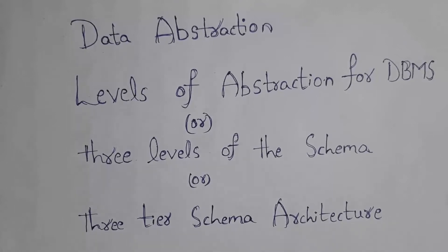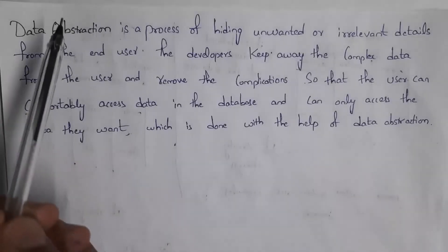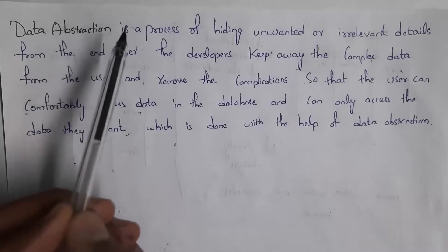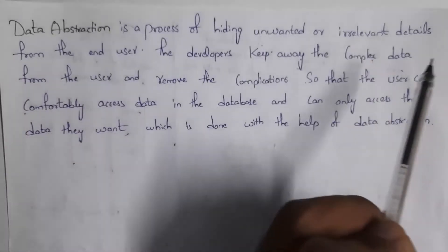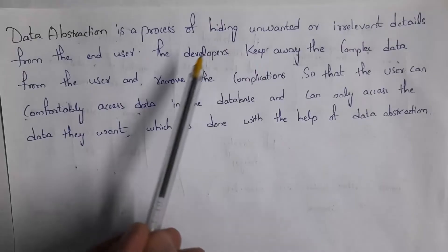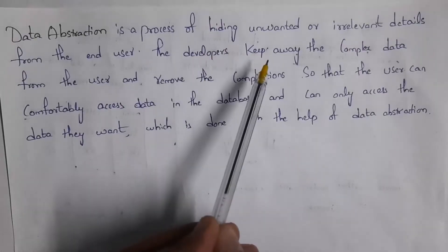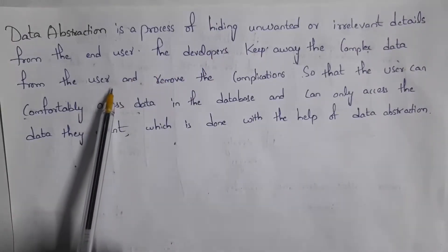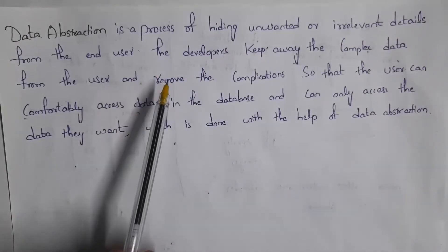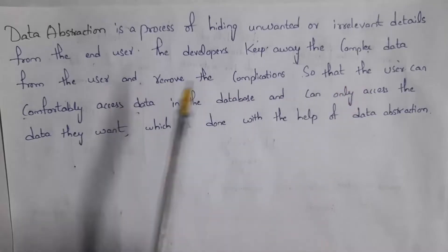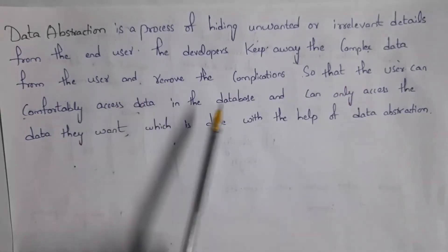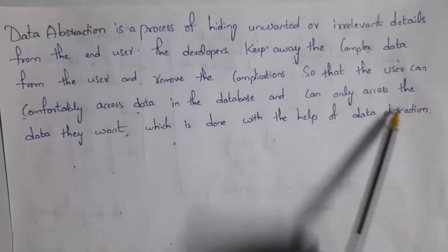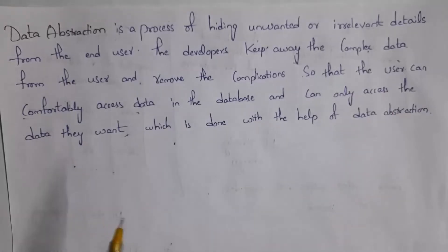First I will explain what is data abstraction. Data abstraction is a process of hiding unwanted or irrelevant details from the end user. The developers keep away the complex data from the user and remove the complications so that the user can comfortably access data in the database, which is done with the help of data abstraction.